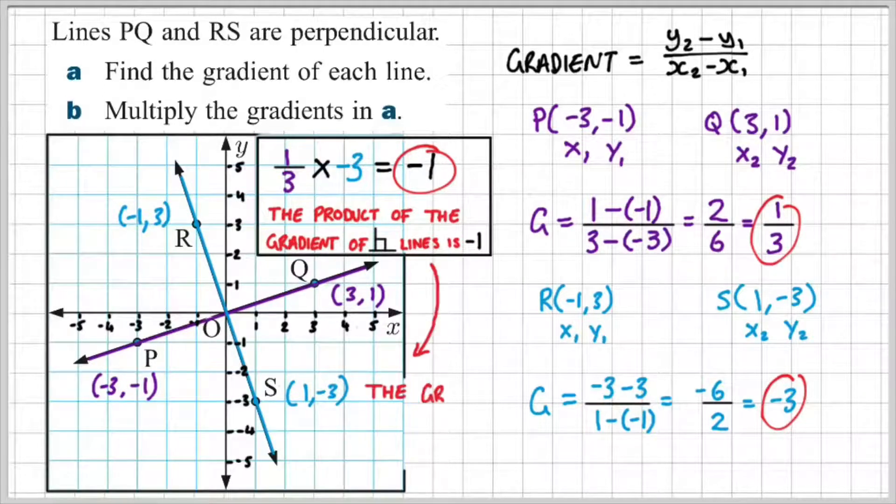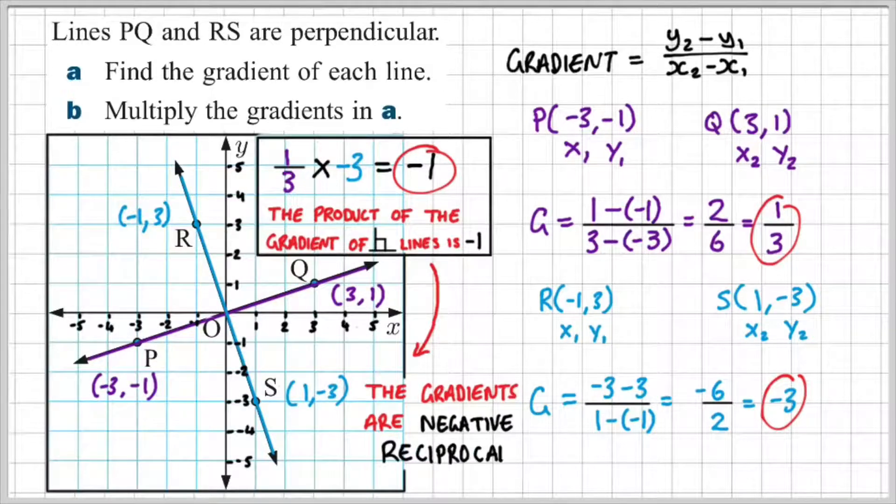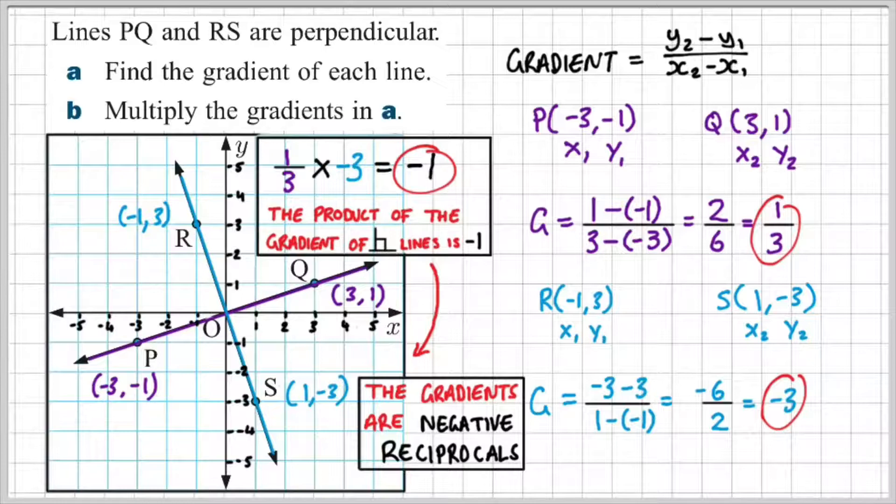In fact, we can further summarize this by saying that the gradients of perpendicular lines are always negative reciprocals. So PQ has a gradient of one third and RS, which is perpendicular, i.e. it intersects at 90 degrees, has a gradient of minus three, which is the negative reciprocal of PQ.